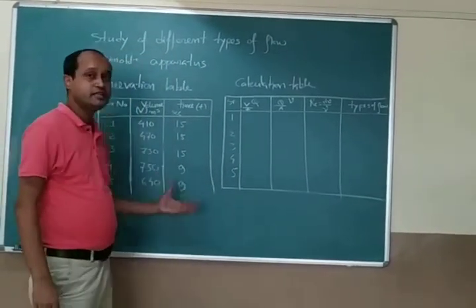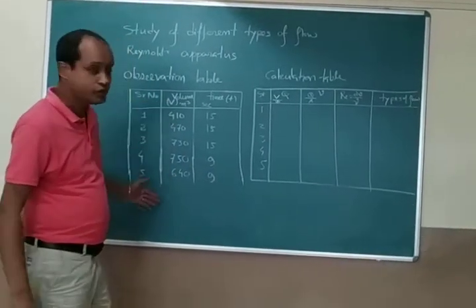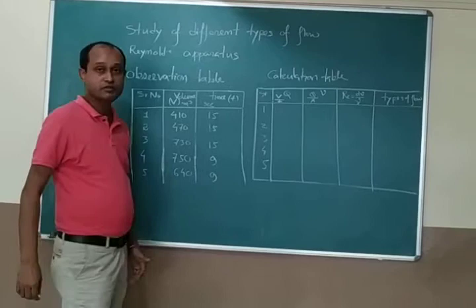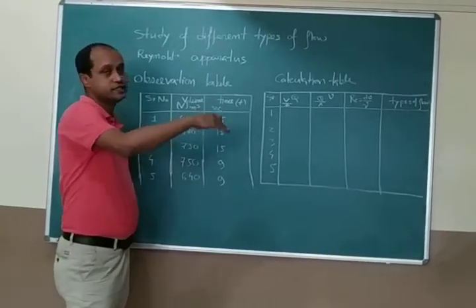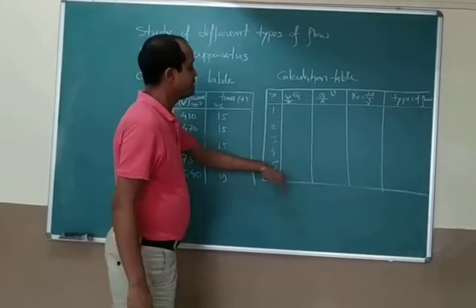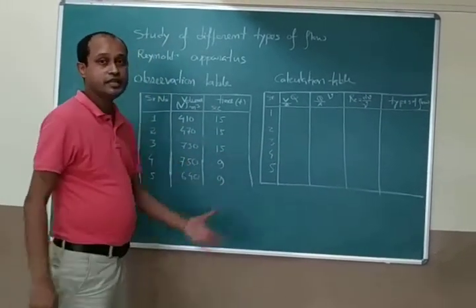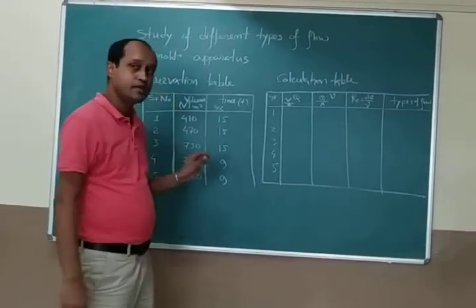But here, you may not get the turbulent flow. With this observation, we don't know whether you are getting the turbulent flow or not. Sometimes it may give some zigzag flow, but still by doing the calculation, you are getting that it is not turbulent flow. That is due to the discharge actually.